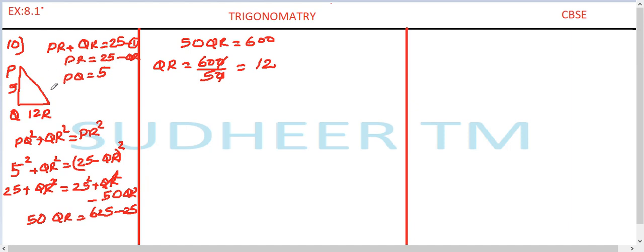PQ is equal to 5. Now we want to evaluate PR. PR is equal to 25 minus QR, which gives 25 minus 12 equal to 13. So, we found all the three sides of the triangle, now it is very easy to evaluate what is asked.